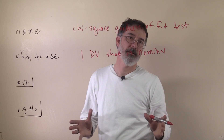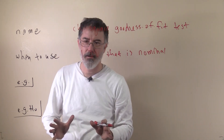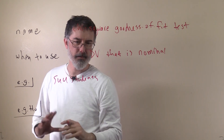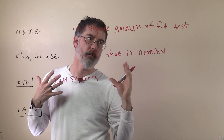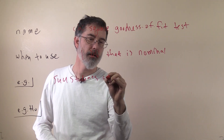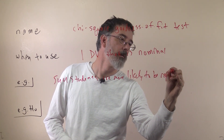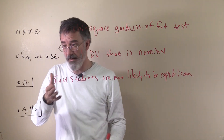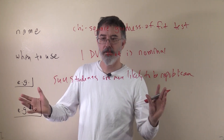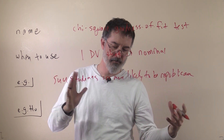What you will have is counts of different kinds of people or observations. The example we will use here is we are trying to figure out if students at Southern Utah University are more likely to be a Republican than a Democrat or any other political orientation. Our research hypothesis is they are more likely to be Republican. The null hypothesis is that SU students are equally likely to be all different kinds of political affiliations.